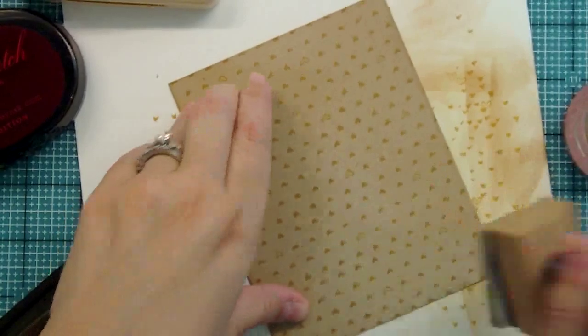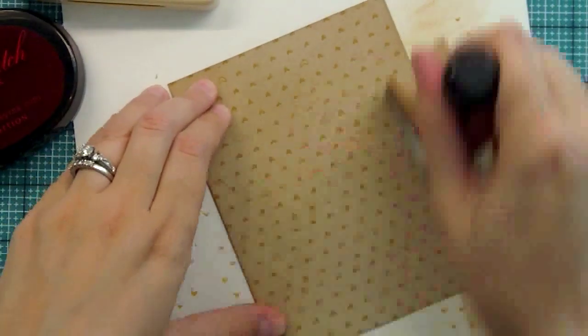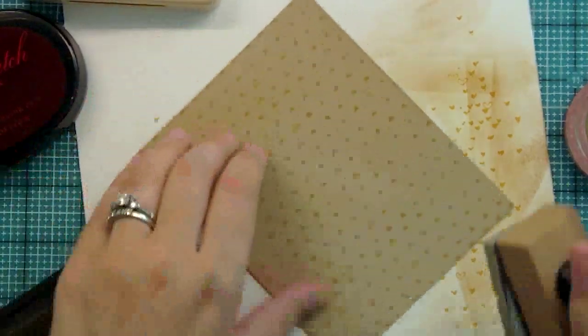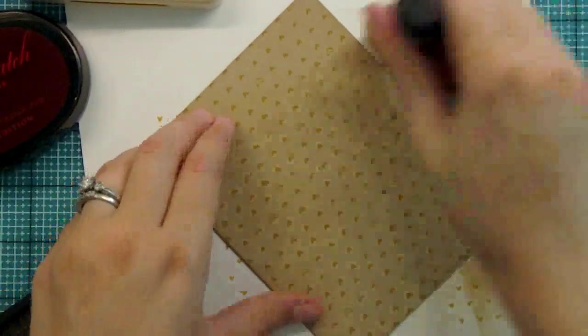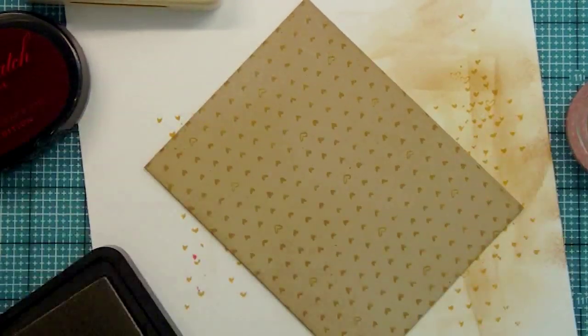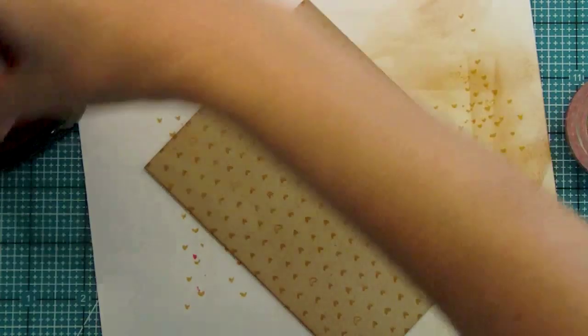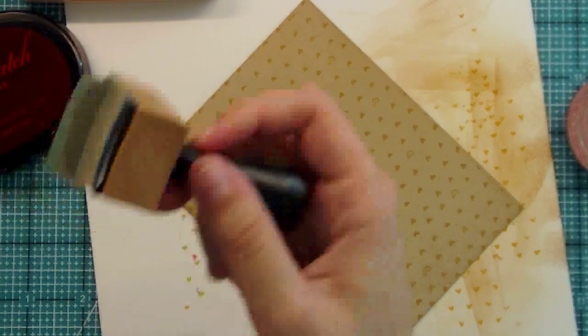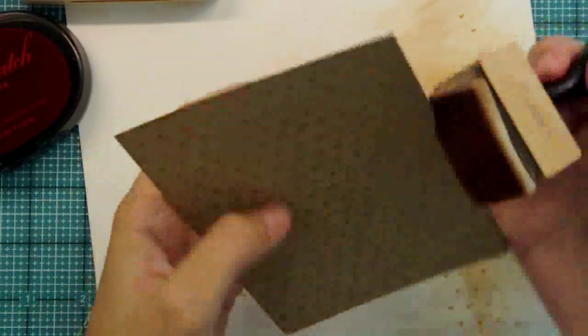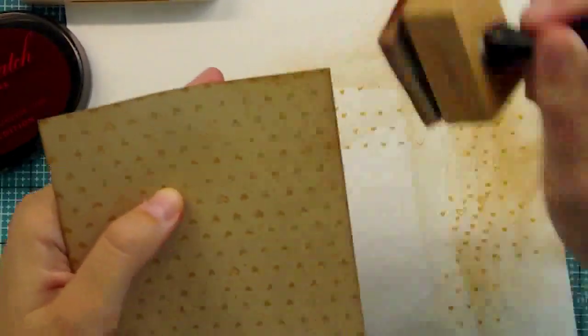I love being able to make a card quickly if you need it. I'm going to take a little bit of a darker ink - the vintage photo. Sometimes I don't even ink it up because the ink just stays on the vintage photo. I'm just going around the edges to give the edge some definition and a little bit of that distressed look.